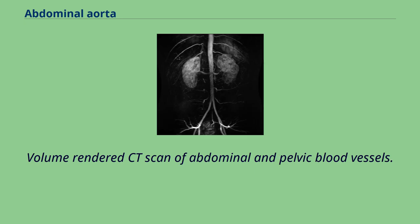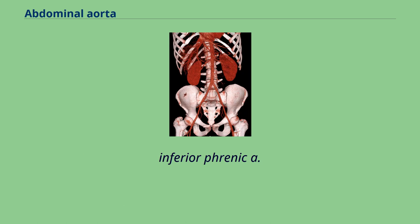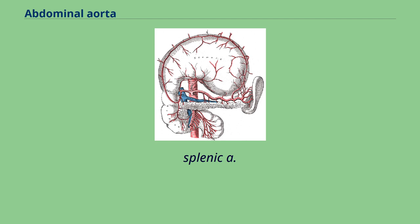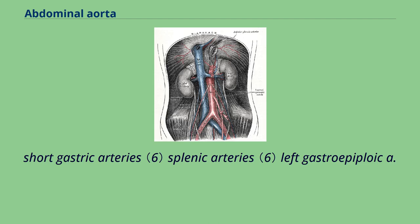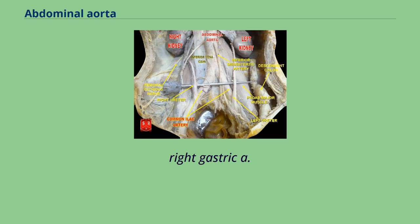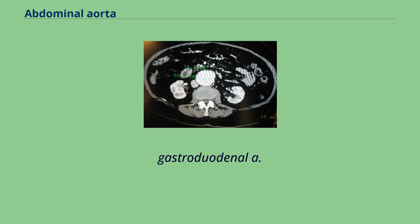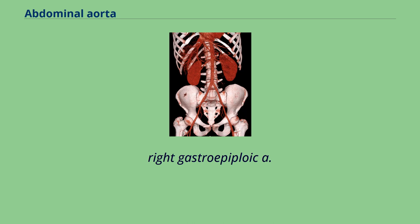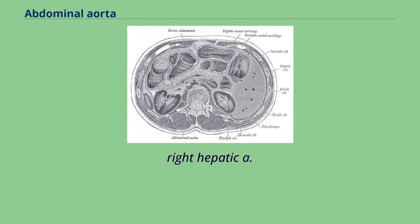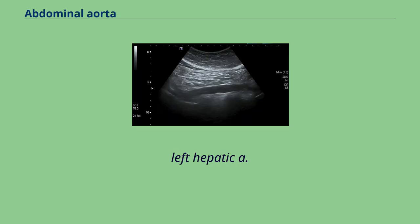Volume rendered CT scan of abdominal and pelvic blood vessels. Inferior phrenic A., Celiac A., Left gastric A., Splenic A., Short gastric arteries, splenic arteries, left gastroepiploic A., Pancreatic arteries, common hepatic A., Right gastric A., Gastroduodenal A., Right gastroepiploic A., Superior pancreaticoduodenal A., Right hepatic A., Cystic A., Left hepatic A.